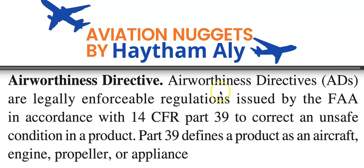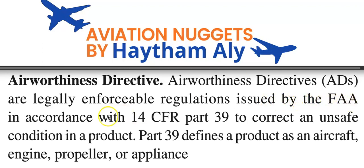Airworthiness directives are legally enforceable regulations issued by the Federal Aviation Administration — the authority in the United States — or any other civil aviation authority in any other country, like EASA in Europe or the Egyptian Civil Aviation Authority in Egypt. The airworthiness directive is issued by the FAA in accordance with 14 Code of Federal Regulations Part 39.